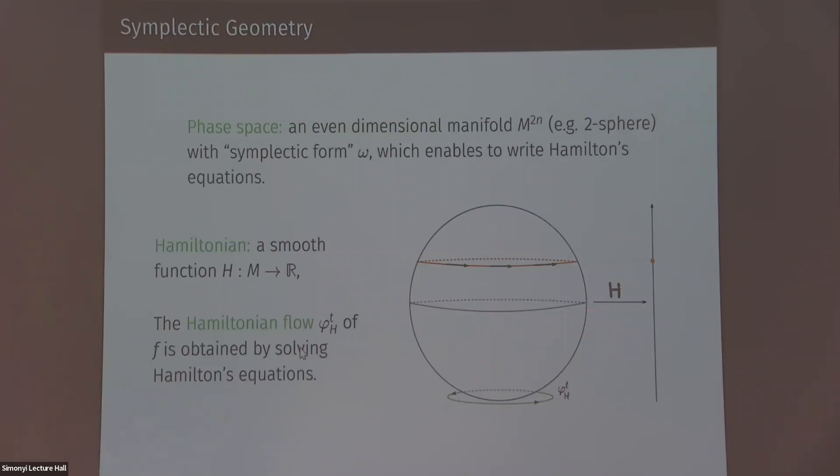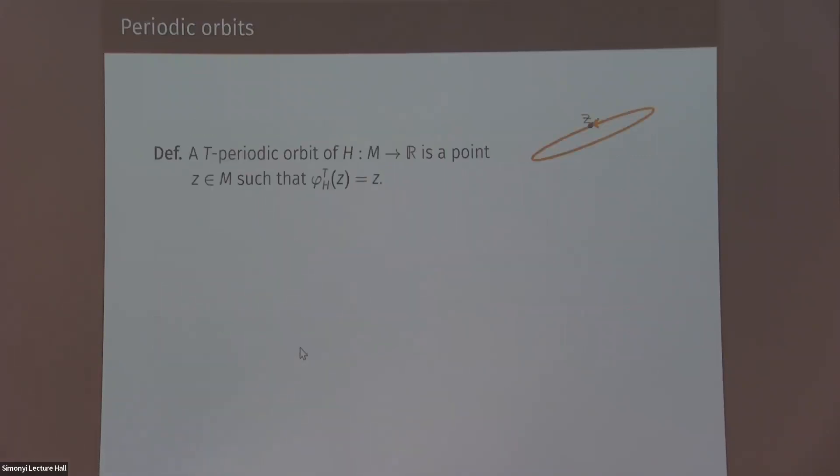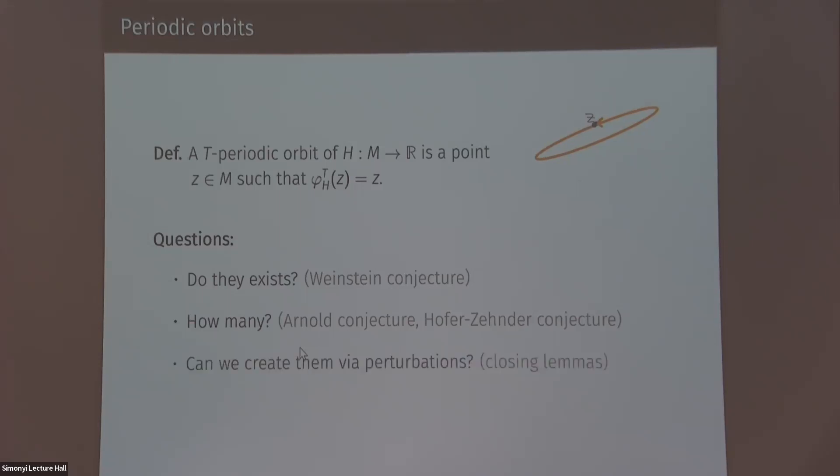So now that we have dynamics, we can ask many dynamical questions. One object that we like to study is periodic orbits. So periodic orbits are simply points in the phase spaces or in the manifold M that return to themselves after some time. There are many questions you can ask about periodic orbits. You can ask, do they exist? You can ask how many there are. Or if you decided you don't have enough, you can ask, can I create periodic orbits via perturbation of the flow or of this generating function H?